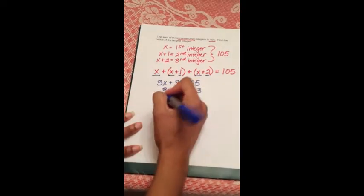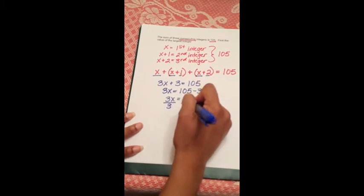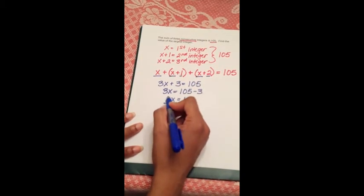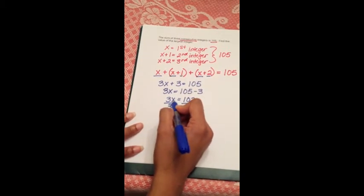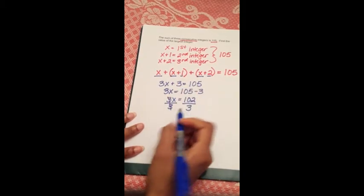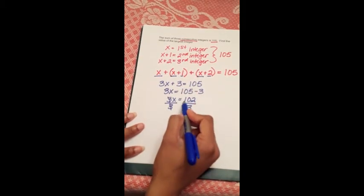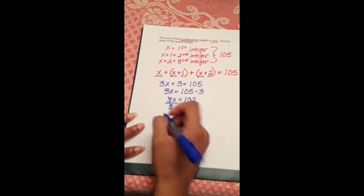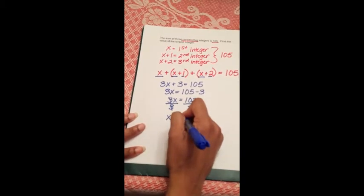So 3x equals 102. We divide both sides by 3, and we're doing this because we want to get rid of the coefficient that corresponds with the x. Those 3s cancel out, and we're left with 102 divided by 3. So x equals 34.